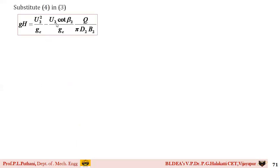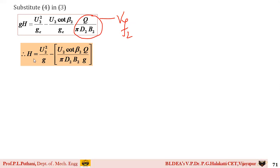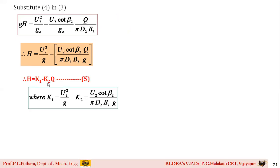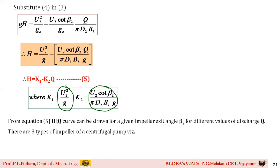After substitution, gH = U2² / gc − (U2 · cot β₂ · Q) / (π·D2·B2·gc). Writing in terms of g: H = U2² / g − (U2 · cot β₂ · Q) / (π·D2·B2·g). This can be written in the form H = K1 − K2·Q, a linear H-Q relationship. Using this, we draw the head-discharge curve (H-Q curve) for the impeller at different blade angles β₂ with varying discharge values.